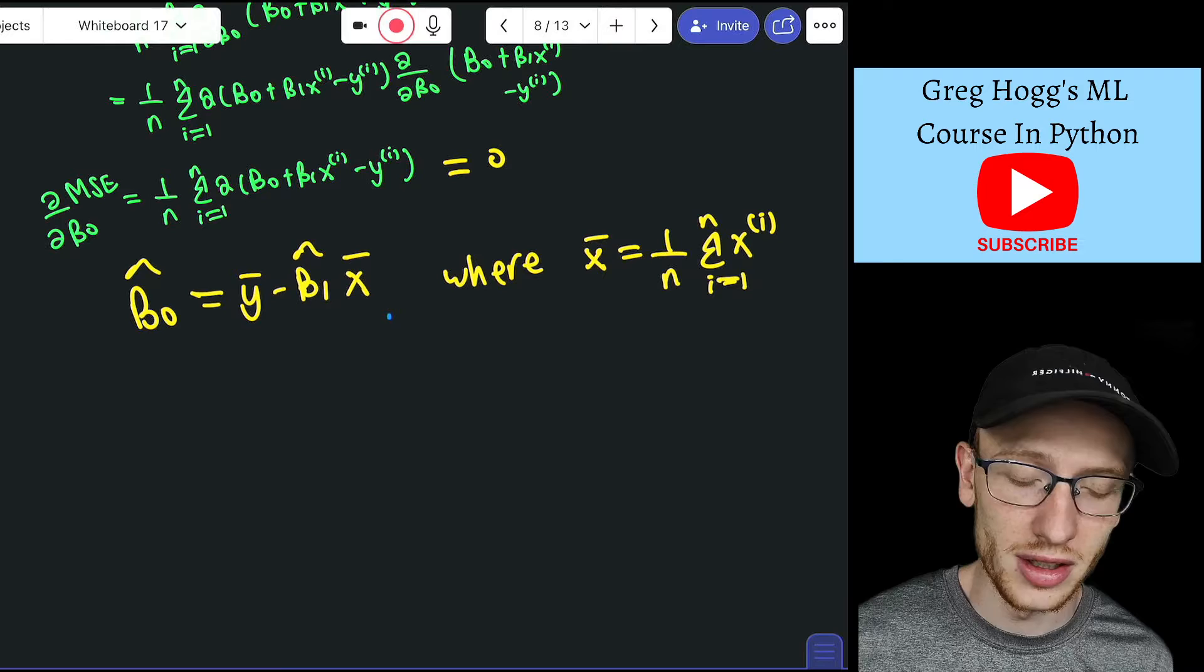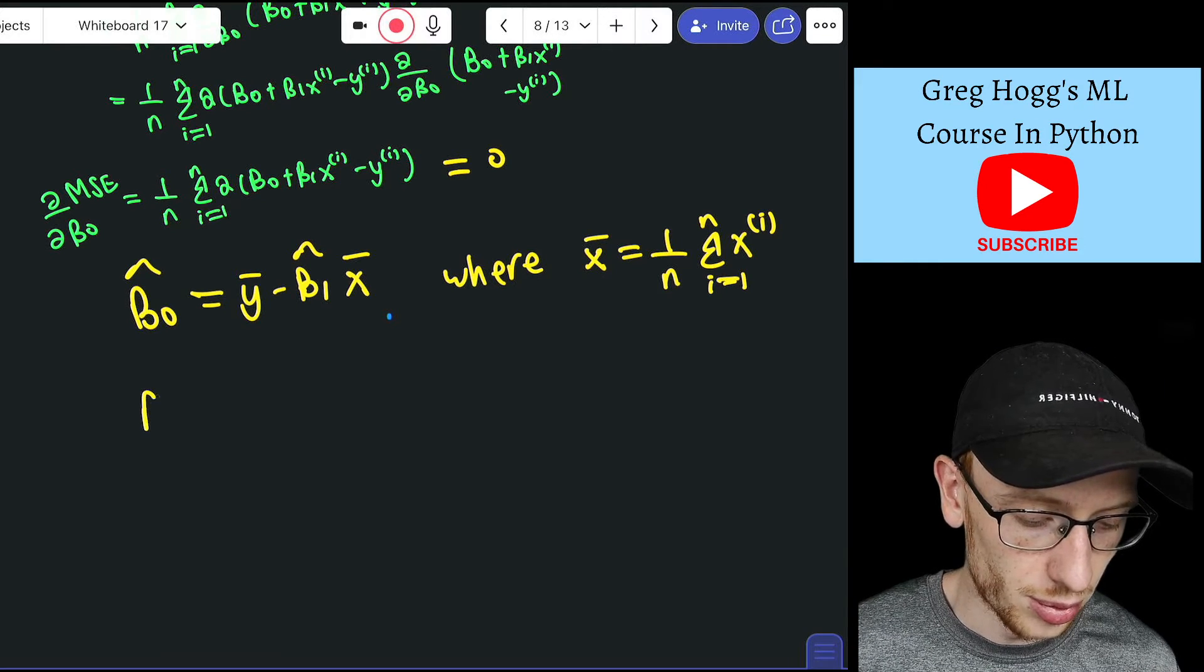Except that's dependent. We have that written dependent on beta1 or beta1 hat. So beta1 hat, that is just equal to: